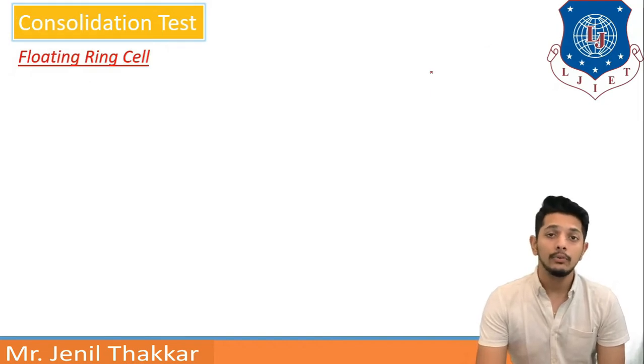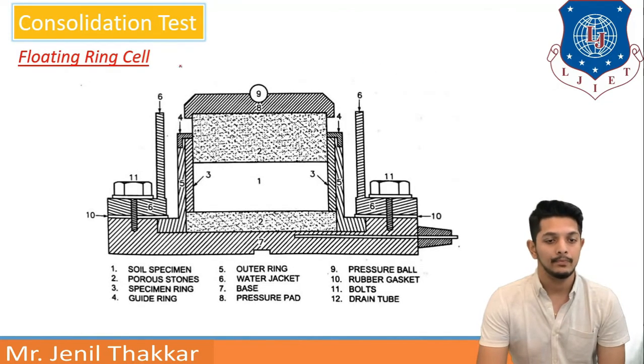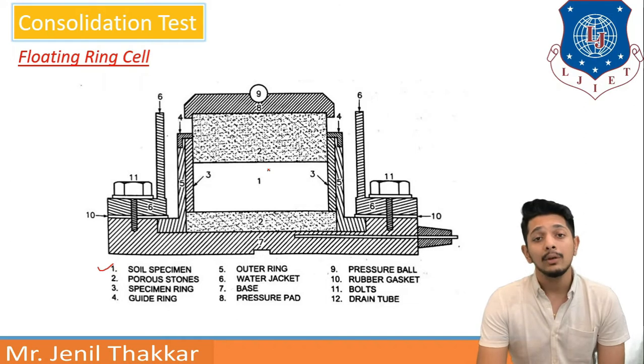Let us understand floating ring cell. Here soil specimen is kept in this middle area. Item 1 is showing soil specimen. Then it is kept in between porous stones as second is showing porous stones.